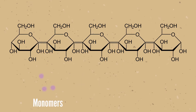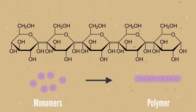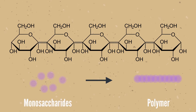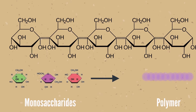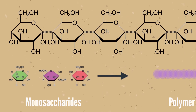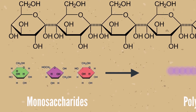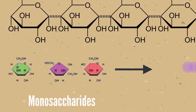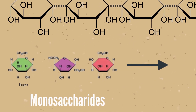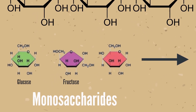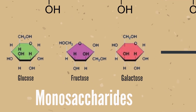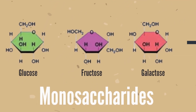A connection of monomers forms polymers, and in the context of carbohydrates, these monomers are named monosaccharides. Look at these molecules here — three types of monosaccharides: glucose, fructose, and galactose.